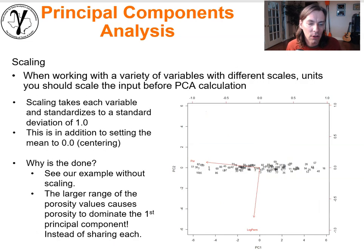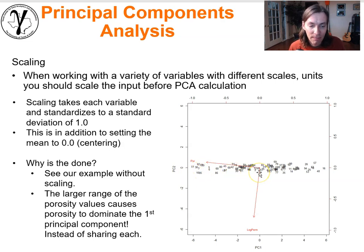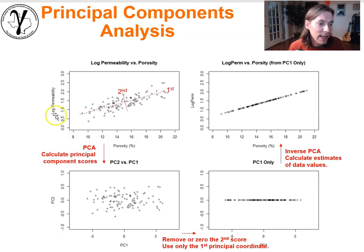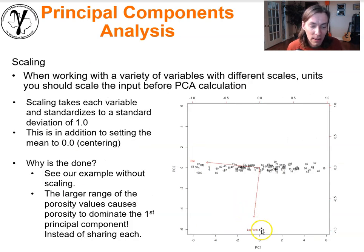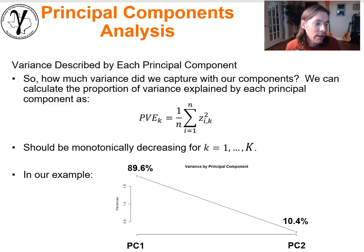What if we had not performed standardization? Without scaling, the vast majority of variability would be described by porosity, with very little described by log permeability. That would just be due to differences in value ranges — log permeability going from 0 to 3 versus porosity from 8 to 22. Porosity would dominate the first principal component with huge loadings, relegating permeability to the second with very little variance.